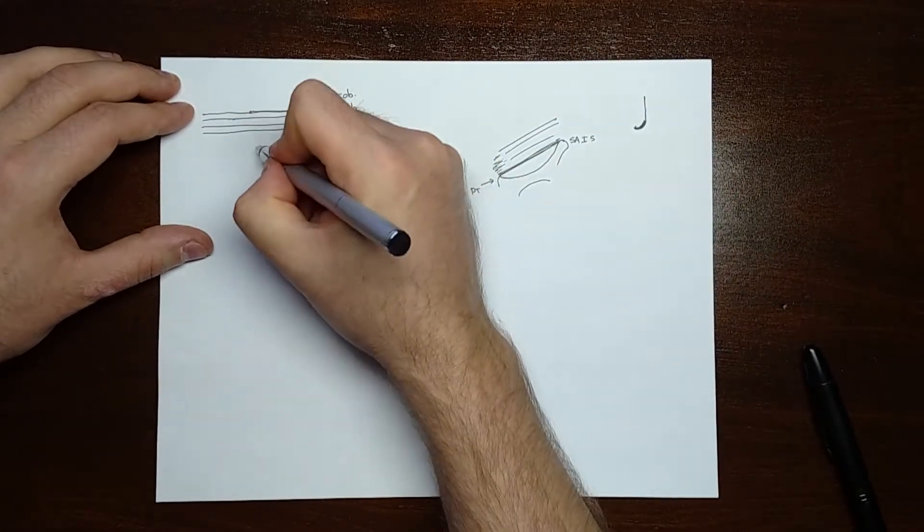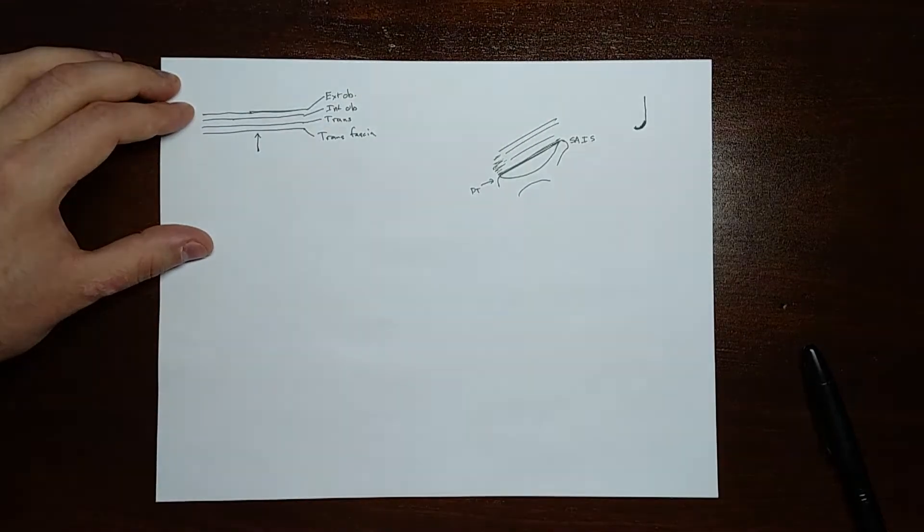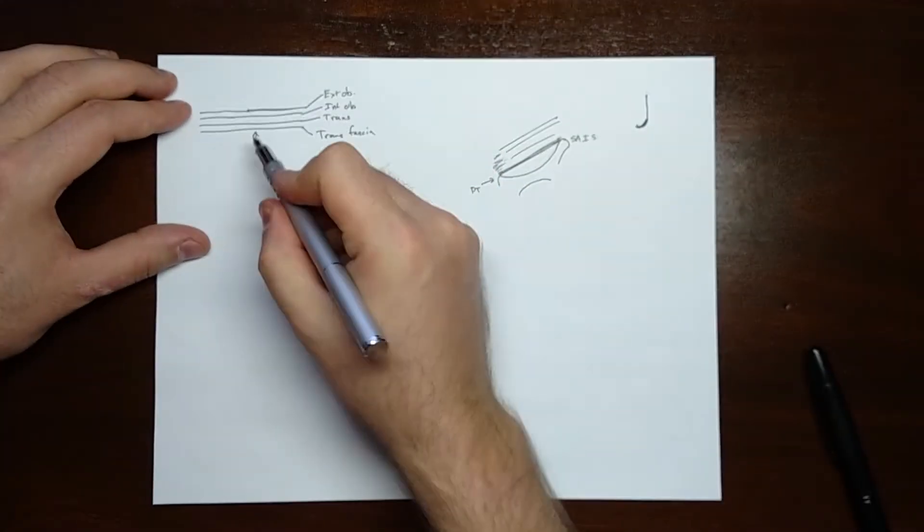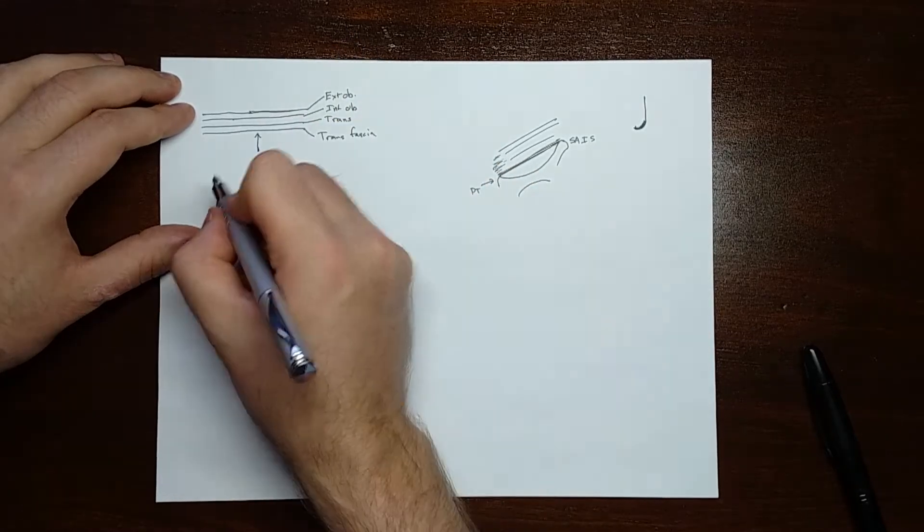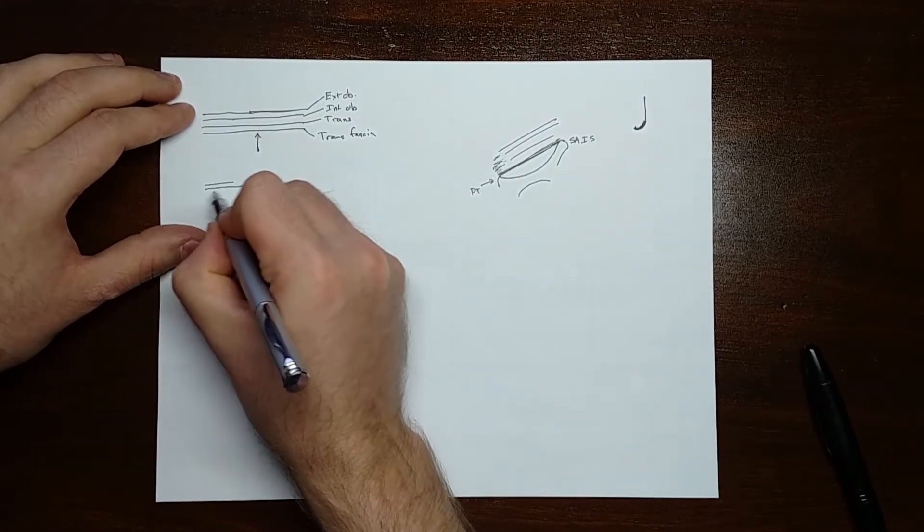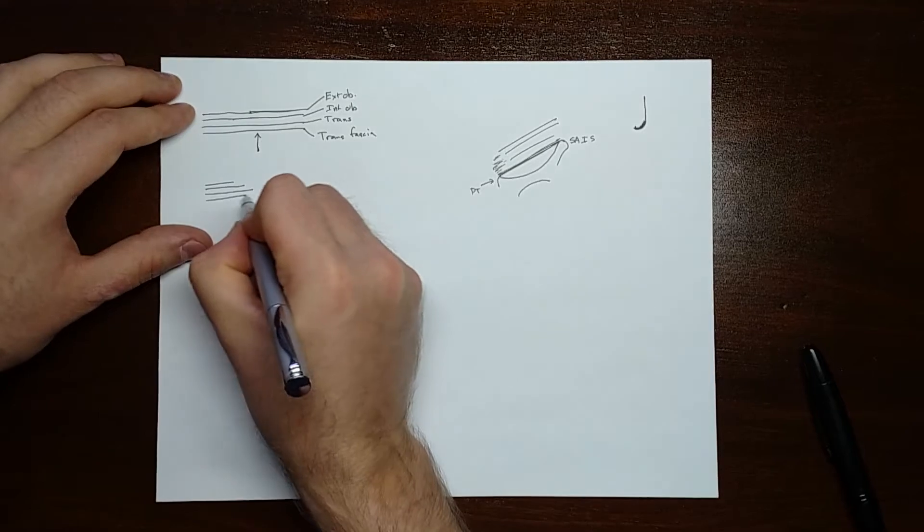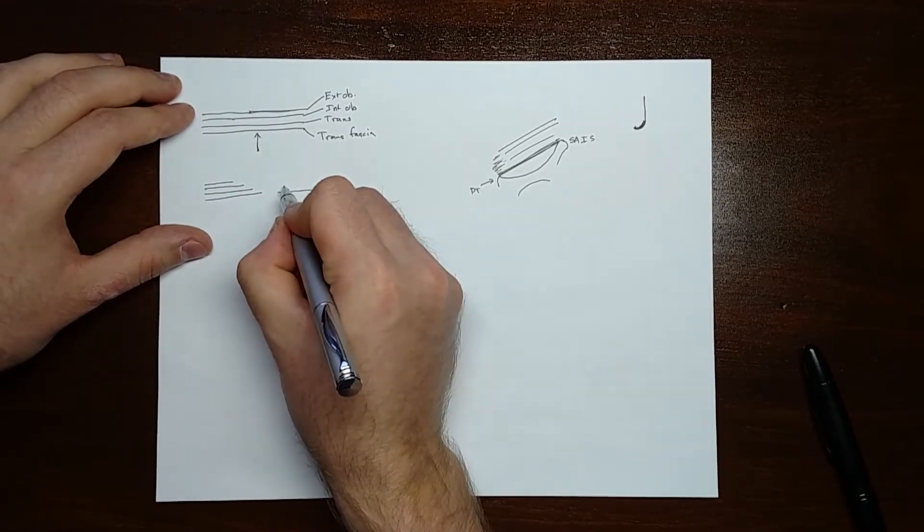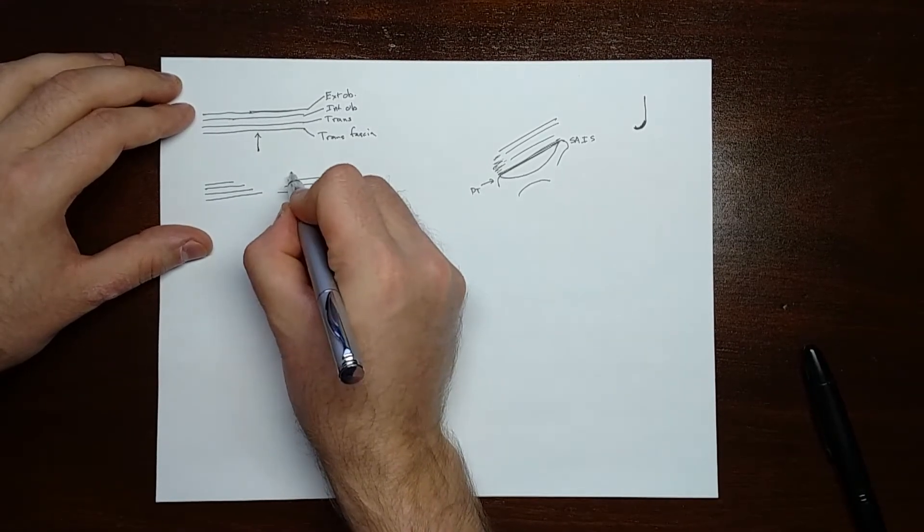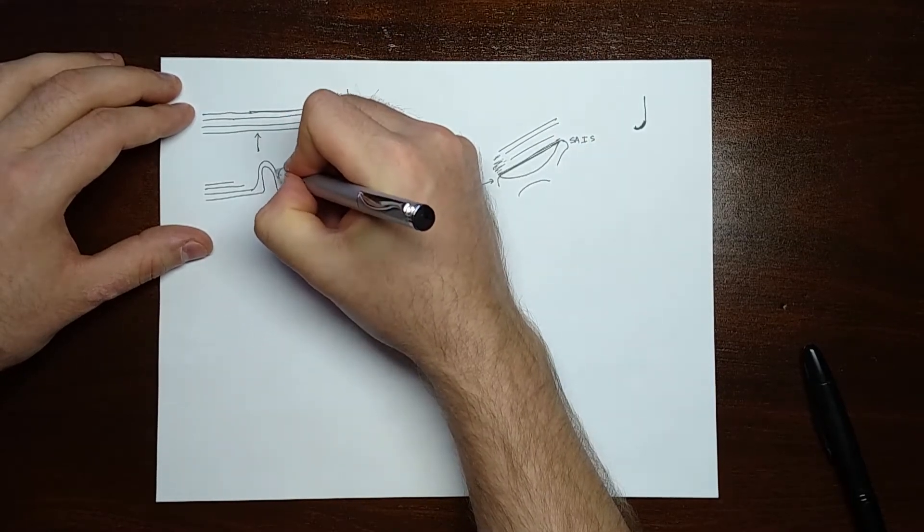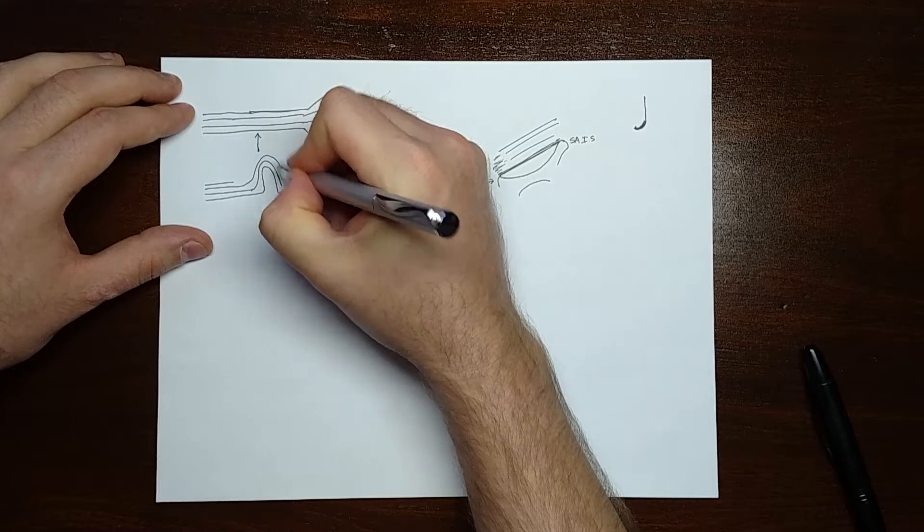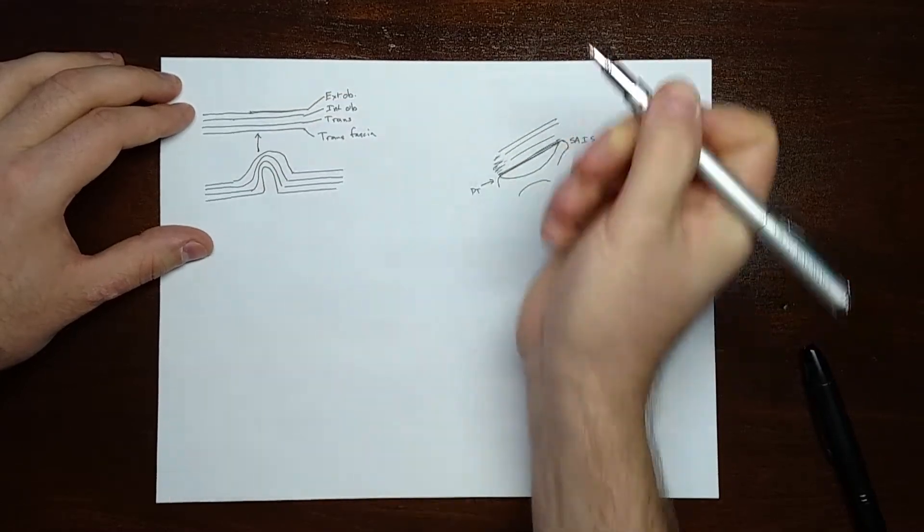What happens when a hernia occurs is something pushes through all these layers and takes them with it, creating a hernia sac. What you get is this multi-layer contraption where there's an inner hernia sac, and then all the different layers get pushed out with it.